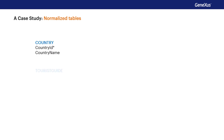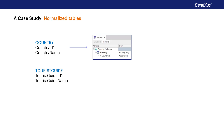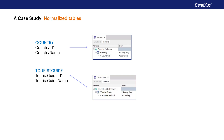From them, GeneXus will create the tables Country and Tourist Guide with the structure shown here. The Country table has CountryID as the primary key and CountryName as the secondary attribute. Over this table, GeneXus will create the primary index by CountryID. Remember that GeneXus automatically creates primary indexes to control the uniqueness of the primary key and to efficiently perform referential integrity checks. The Tourist Guide table has TouristGuideID as primary key and TouristGuideName as secondary attribute, with its corresponding primary index by TouristGuideID.